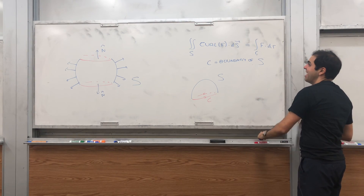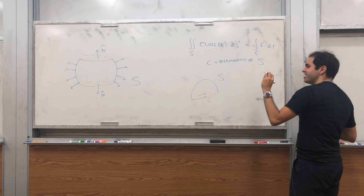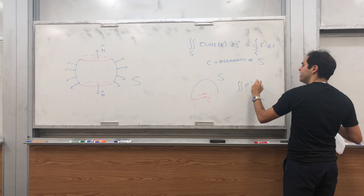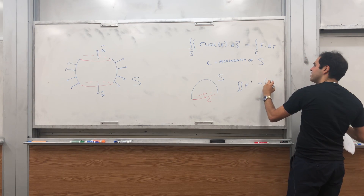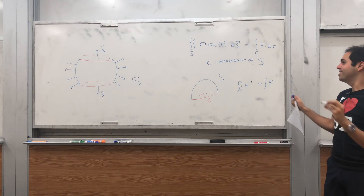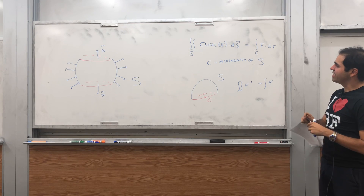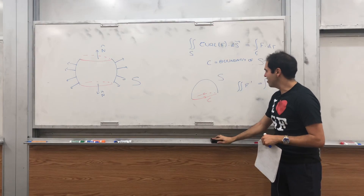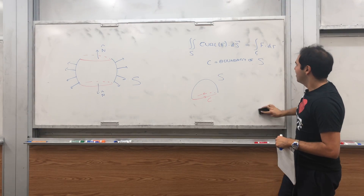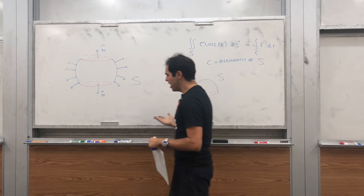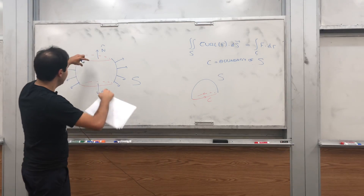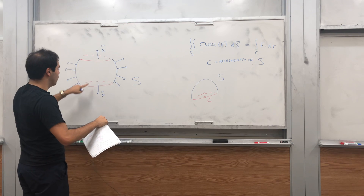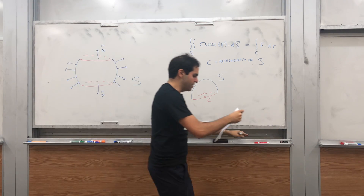This is very neat and it also makes sense in terms of the regular Fundamental Theorem of Calculus — the double integral of f prime is the single integral of f; here the derivative is the curl. Now, what can you tell me about the boundary curve? Notice we have two boundary curves: on one hand C1, and on the other hand C2.